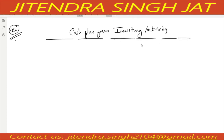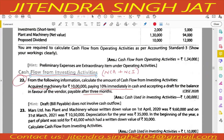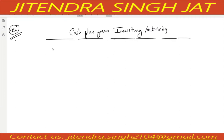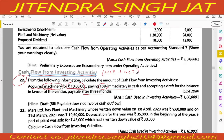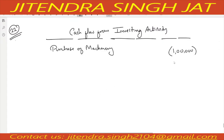Under investing activity, we write only non-current assets and non-current investments. Machinery is a non-current asset. Machinery costs rupees 10 lakh but we paid only 10 percent immediately, so 10 percent of 10 lakh is 1 lakh. The cash flow statement is prepared on cash basis, so 1 lakh is paid out of 10 lakh and the rest is payable after three months, not paid.